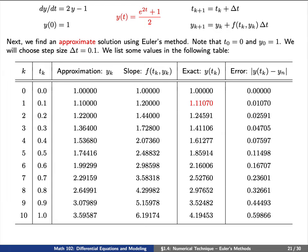And finally, to finish off the values here in the row, we can compute the exact value y of t sub 1 by remembering that t sub 1 is 0.1 and y of t is e to the 2t plus 1 over 2.